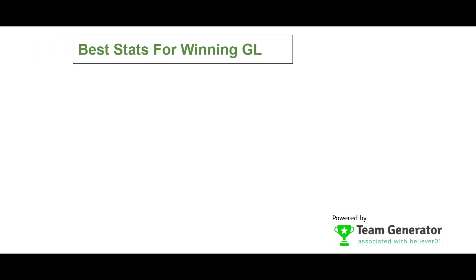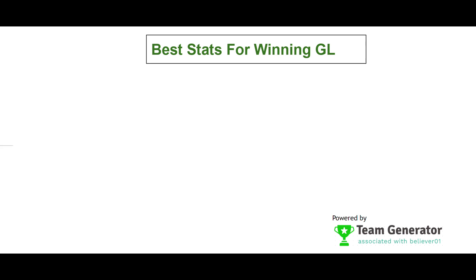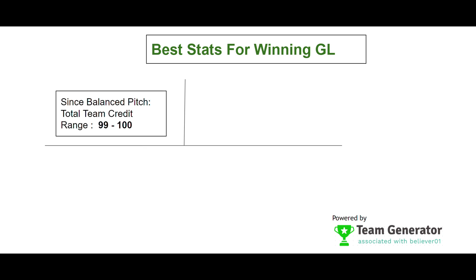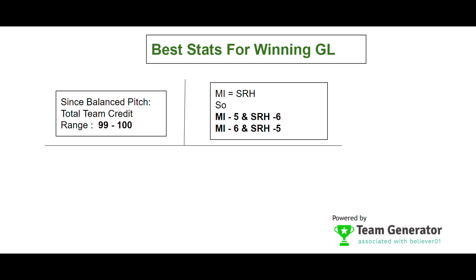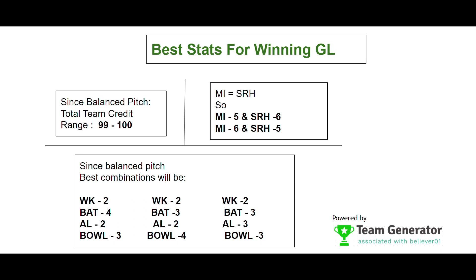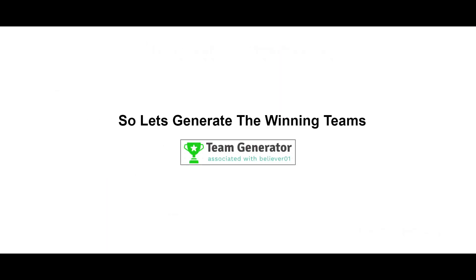For the software input, the total team credit range of 99 to 100 will be ideal. The team partition strategy will be five players from Mumbai Indians and six from SRH, or six from Mumbai Indians and five from SRH. The ideal team combinations are: two wicket-keepers, four batsmen, two all-rounders, three bowlers; or two wicket-keepers, three batsmen, two all-rounders, four bowlers; or two wicket-keepers, three batsmen, three all-rounders, three bowlers.